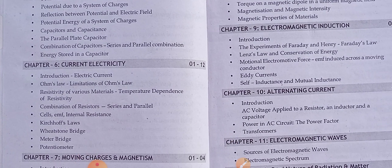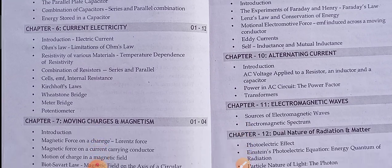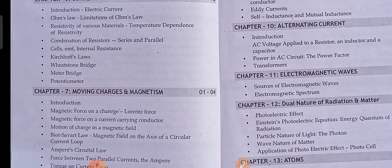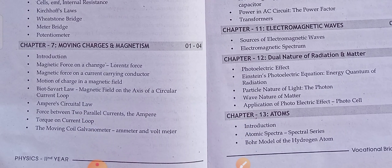Chapter 6 - Current Electricity: Ohm's law, resistivity of various materials, combination of resistors, Kirchhoff's law, Wheatstone bridge, meter bridge, and potentiometer. Chapter 7 - Moving Charges and Magnetism.